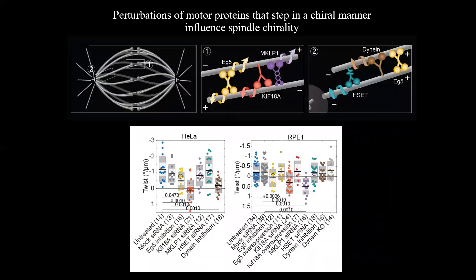Next, we wanted to find the origin of the spindle chirality, so we performed a candidate screen on HeLa and RPE1 cells in which we perturbed motor proteins and other microtubule-associated proteins one by one. First, motor proteins that exert torque on the microtubules may generate the twisted shape of a bundle by twisting the microtubules within the bundle around each other, or by twisting microtubules with respect to the spindle pole.